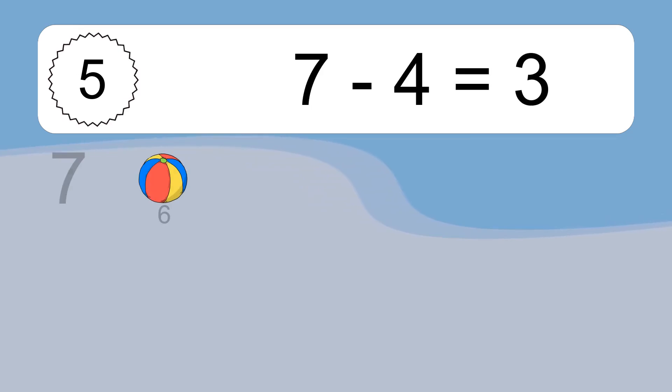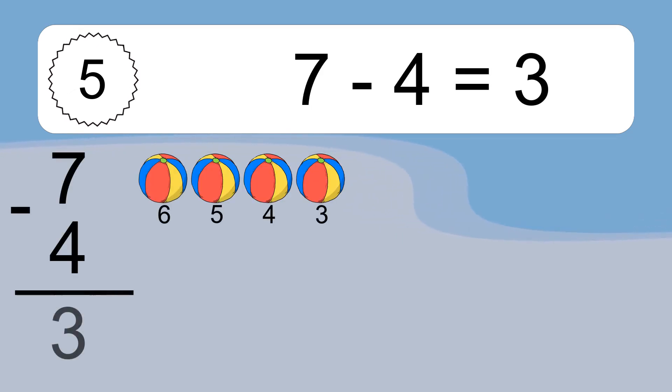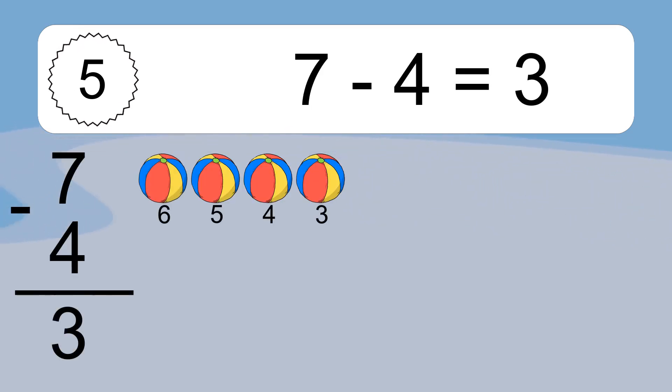7 minus 4 equals what? 7 minus 4 equals 3. Let's count it. 6, 5, 4, 3.